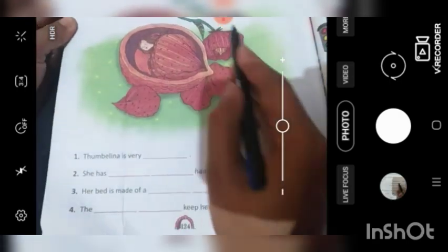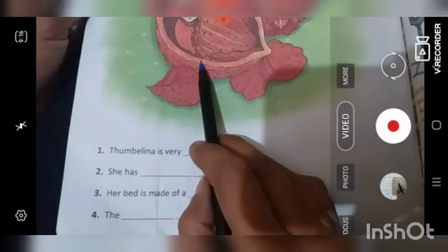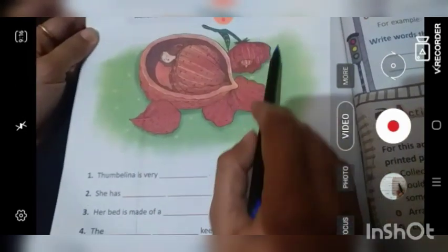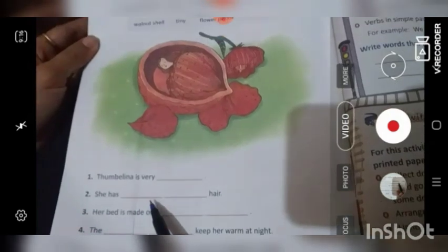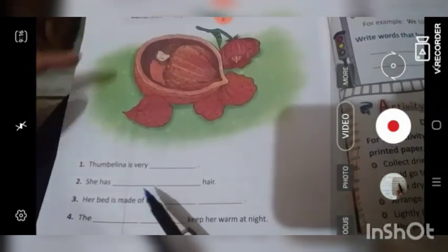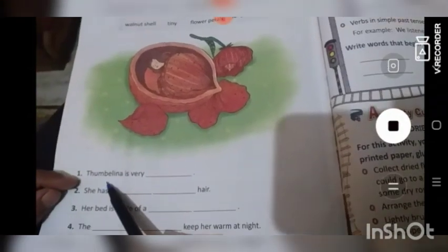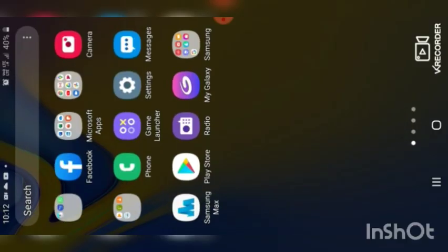Moving to page number 124. Such a beautiful picture of Thumbelina. And this is a picture composition. You will see the picture and you will fill the blanks. Picture ko dekhke hum blanks fill karenge.